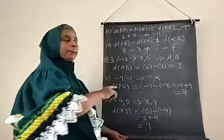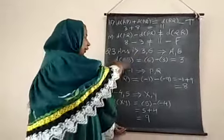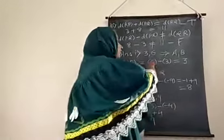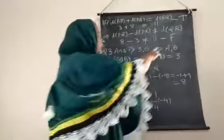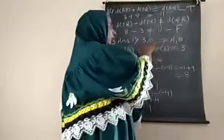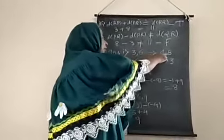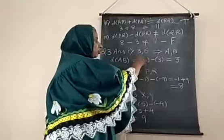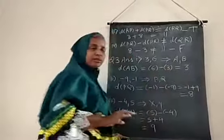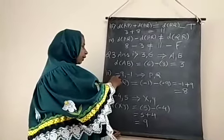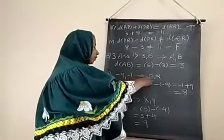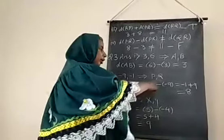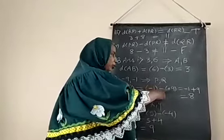Question number three: some coordinates are given and we find the distance. In the first sub-question, coordinates three and six are given. Let A equal three and B equal six. Distance AB is six minus three, which equals three. In the second sub-question, coordinates minus nine and minus one are given. Let them be P and Q. Distance PQ is minus one minus minus nine, which equals eight.